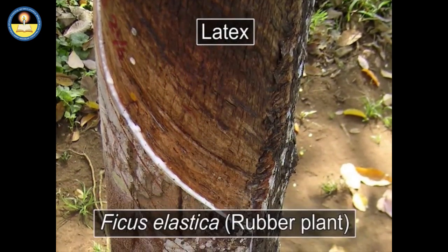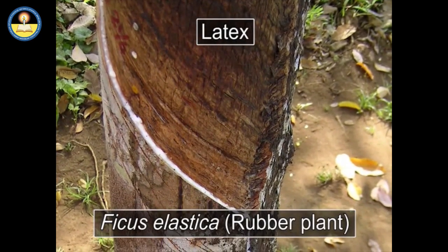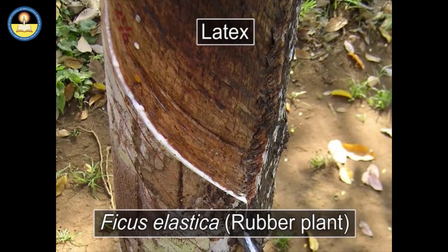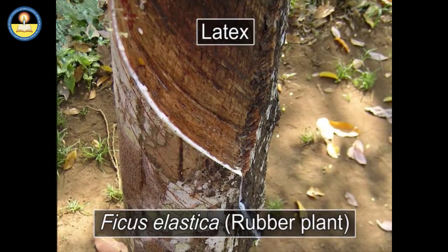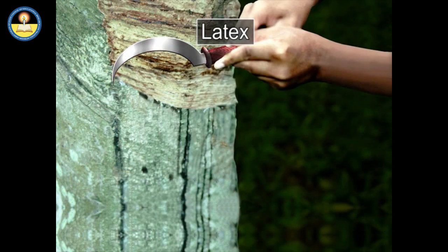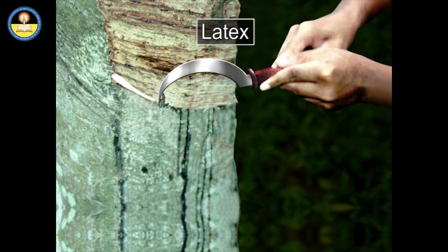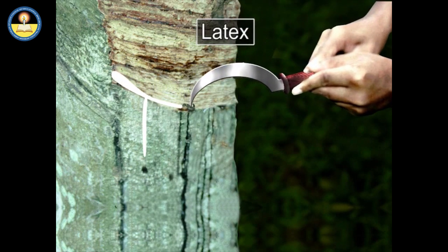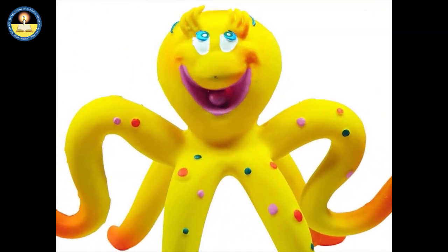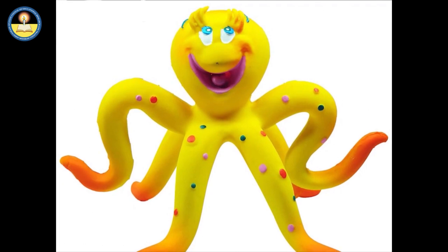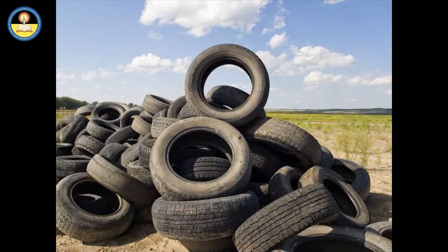Latex. Ficus elastica, commonly known as the rubber plant, secretes a milky sticky sap known as latex. Latex is collected by making cuts into the bark with a special knife and allowing the latex to flow into a cup. After about three to four hours, the sap is manually collected and some chemicals are added to harden it. The processed form of the product is used to make toys, glass, and tires.